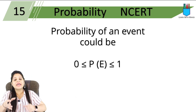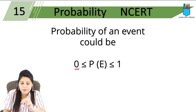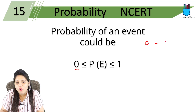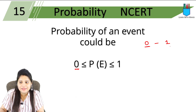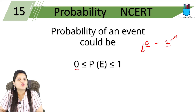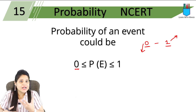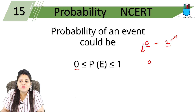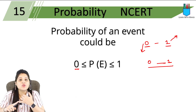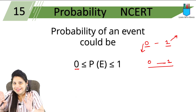The last thing to understand: the probability of an event is always between 0 and 1. It can be 0 — which we saw with the impossible event — or it can be between 0 and 1, but it will never be greater than 1 and never less than 0. A probability value like 3, 4, or 5 is not possible.